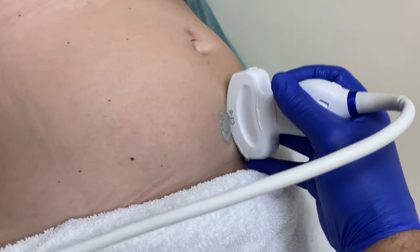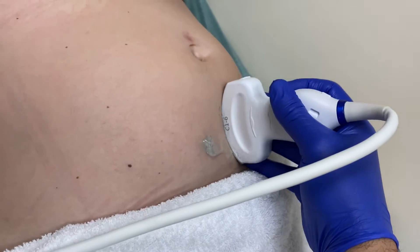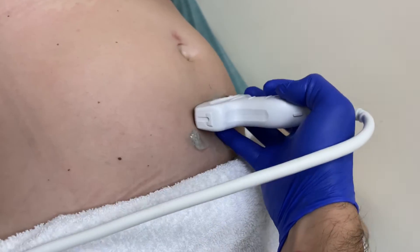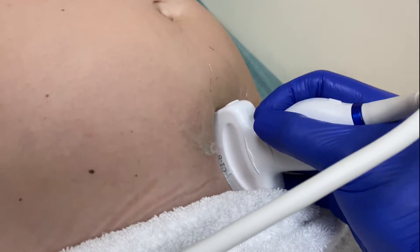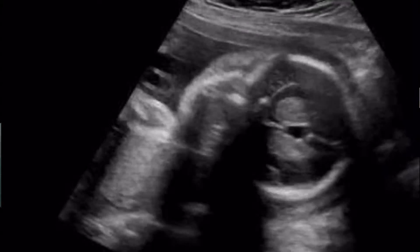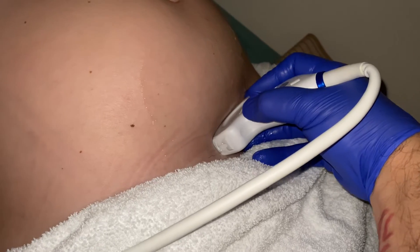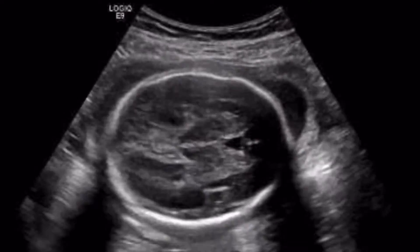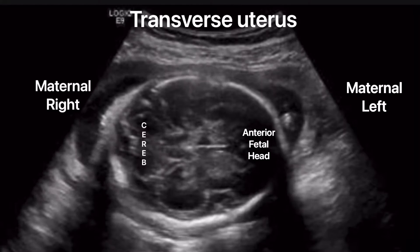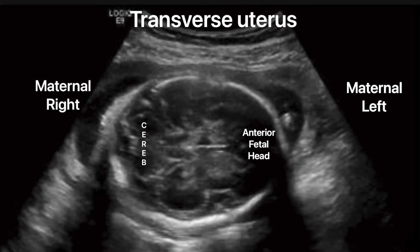Here you have the maternal abdomen sagittal or longitudinal, and the maternal abdomen transverse. For presentation, you want to come down here towards the symphysis pubis, and we know that this baby is vertex or cephalic. We'll go transverse down here where the baby's head is — and there's the head. Back here is the cerebellum to the left side of the screen, so the baby's face is to the right of the screen, which is the maternal left. So baby is head down, face maternal left.